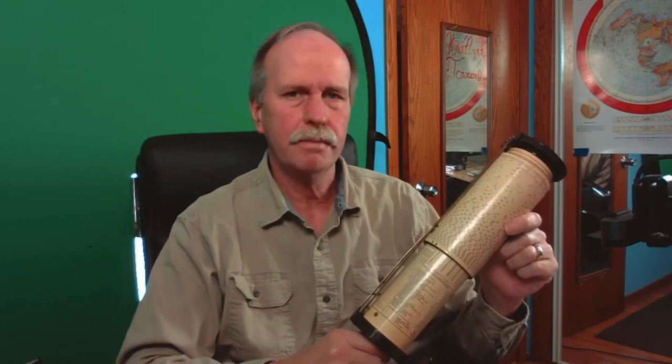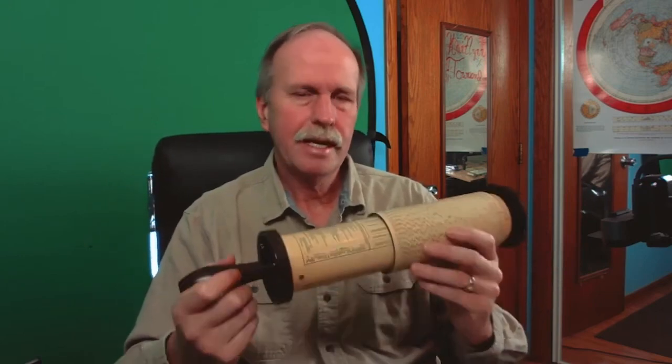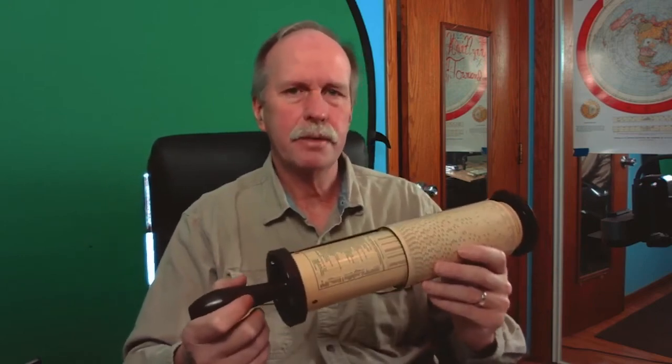And then, of course, if you really need insane accuracy, up to 5 significant digits, you use one of these. This is a Fuller calculator. It has a scale on it not measured in inches, but measured in feet. This has a spiral scale around this drum that's 41 feet long, and it's good to 5 significant digits. We're going to learn all about all of these slide rules and the scales on them in future episodes.